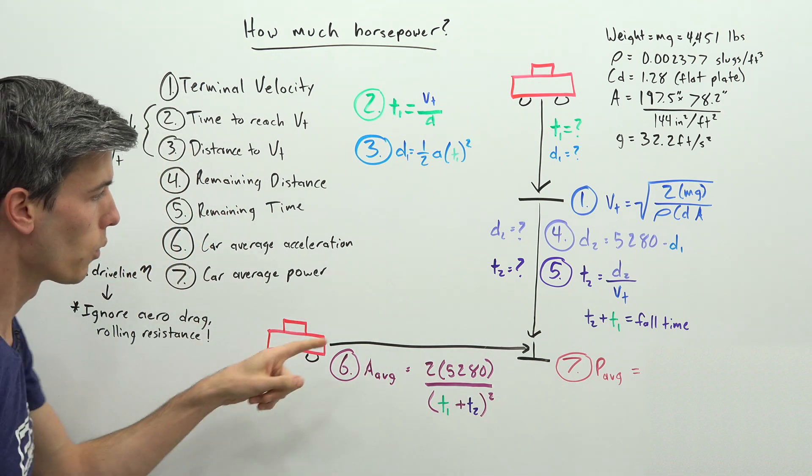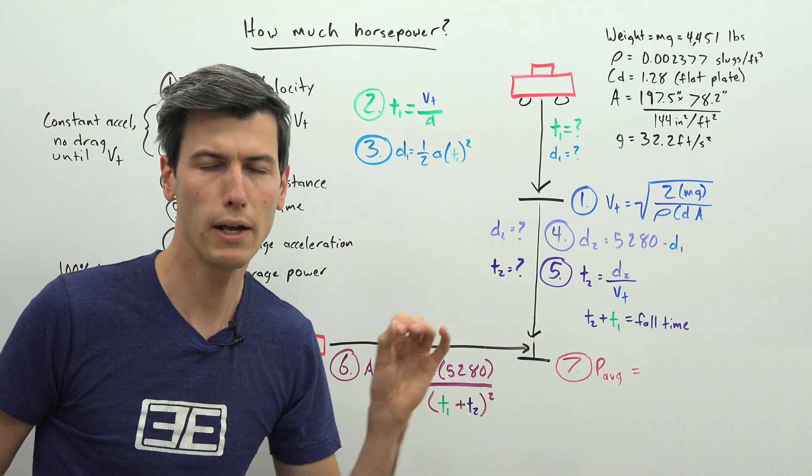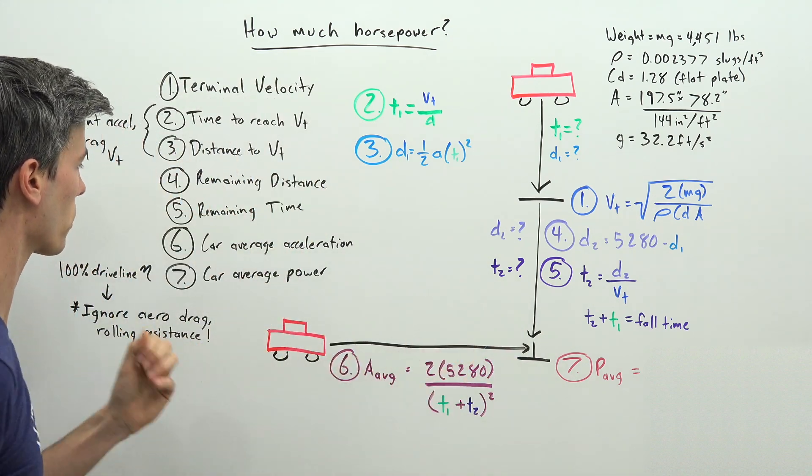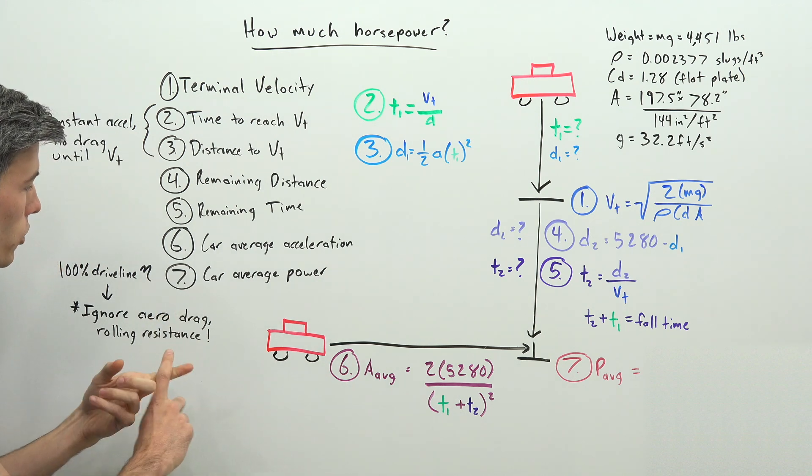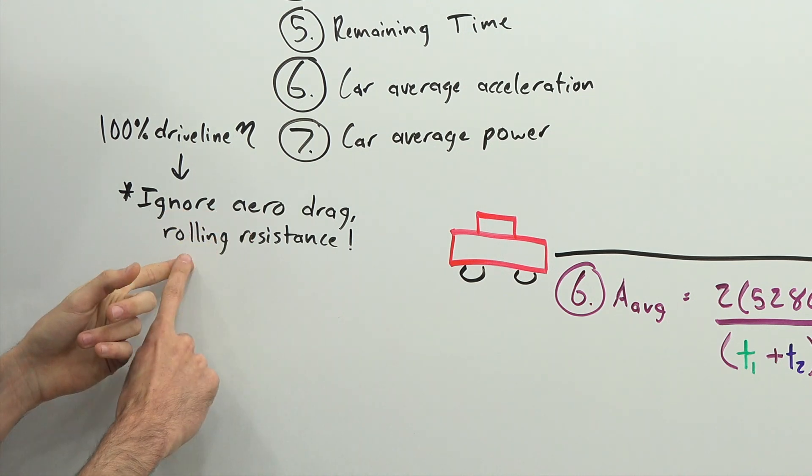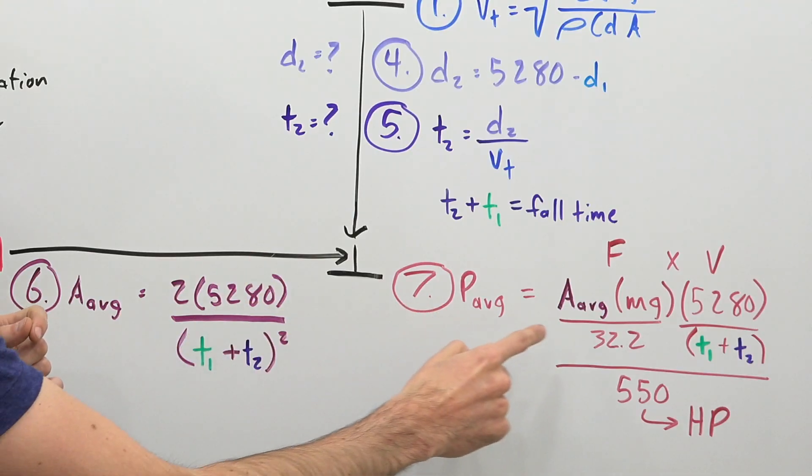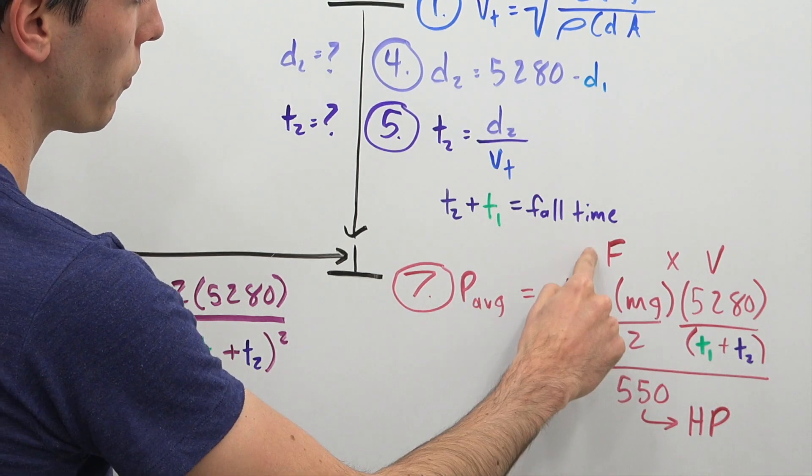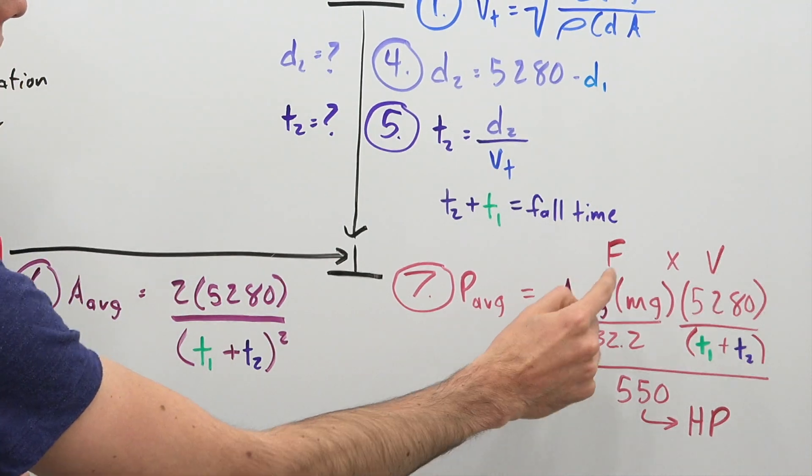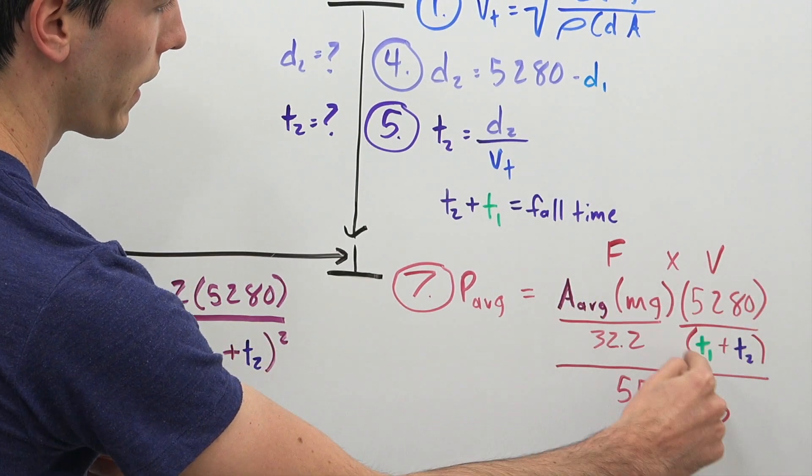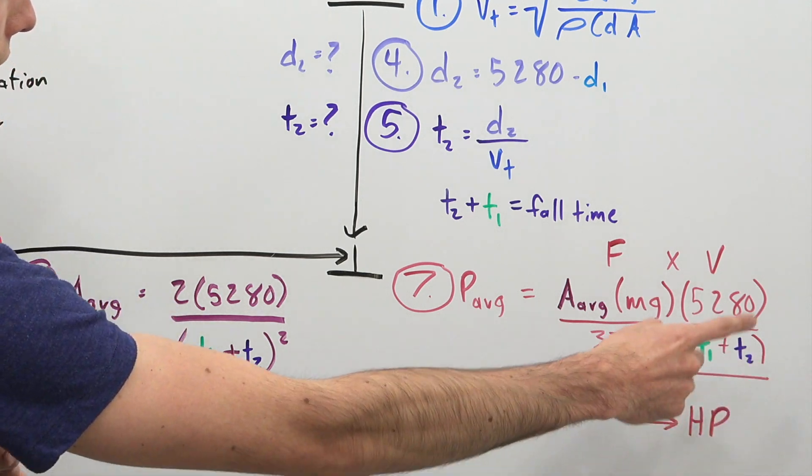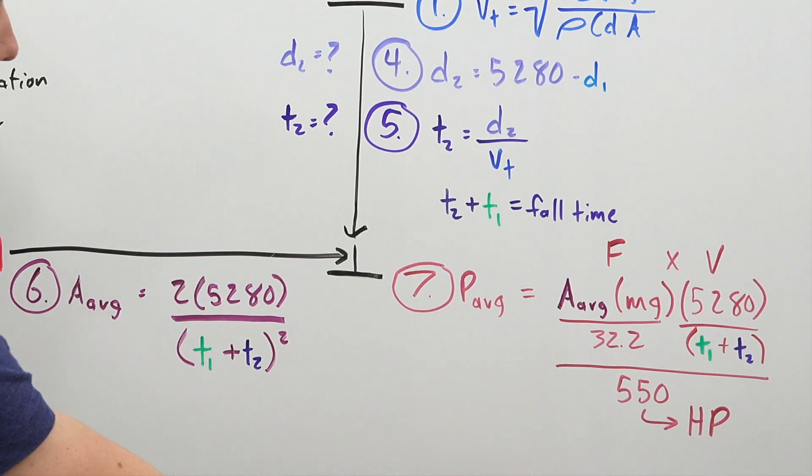And so with that average acceleration we can figure out our average power. So we're not figuring out peak power for this equation, we're figuring out average power needed for the car and the good news is we get to ignore a lot of things. We have to ignore driveline inefficiencies, we get to ignore aerodynamic drag and we get to ignore rolling resistance. So that makes the math pretty easy. Power is equal to force times velocity. We have the equation for force here including the average acceleration which we just calculated, multiplying that by the velocity the distance we're traveling divided by the time it takes. And then we take all of that and divide it by 550 to get in units of horsepower.